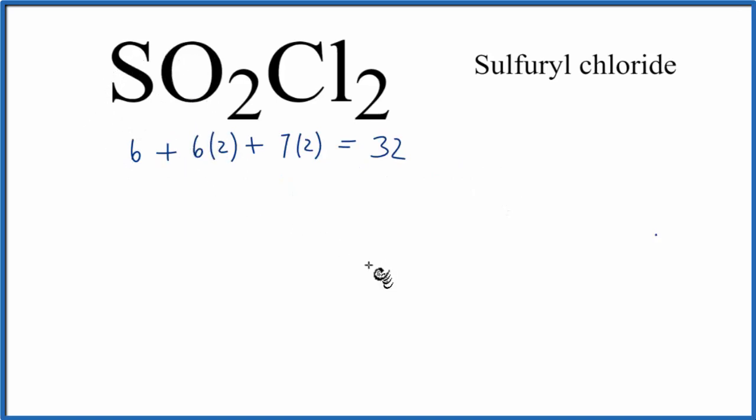Sulfur is the least electronegative, we're going to put that in the center of our Lewis structure, and then we can put an oxygen here, it doesn't really matter where we put them, here, and then a chlorine, and a chlorine atom. So we have our sulfur in the center, we have 32 valence electrons.